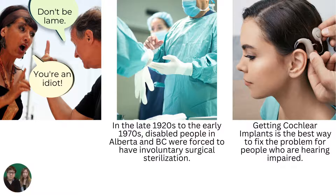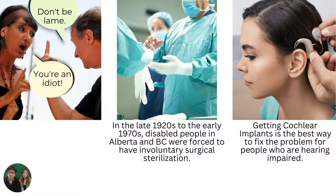Examples such as these phrases: 'don't be lame,' 'you're an idiot.' In the late 1920s to early 1970s, disabled people in Alberta and BC were forced to have involuntary surgical sterilizations. And the idea that getting cochlear implants is the best way to fix a problem for people who are hearing impaired.